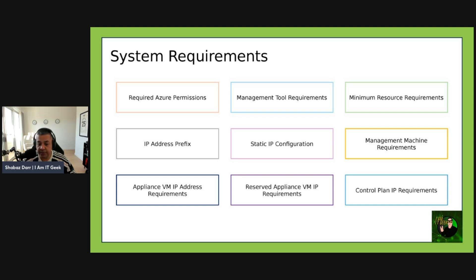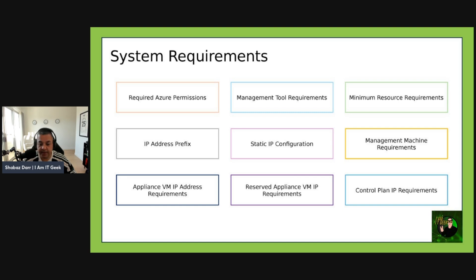The management machine is the machine used to run commands to deploy and maintain Arc resource bridge. It must have Azure CLI 64-bit installed, and it needs to be able to communicate to the control plane IP through SSH on TCP port 22 and the Kubernetes API on port 6443. It also needs the same access and ports to the appliance VM IP, and must be able to communicate to the private cloud manager endpoints. A static assigned IP address is recommended. The reserved appliance VM IP and the control plane IP also need to communicate to the appliance VM and Azure, and static IPs should be used for those as well.